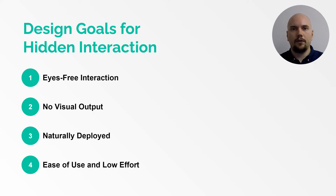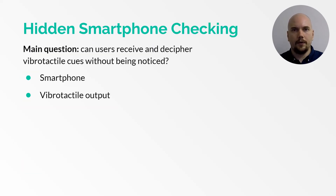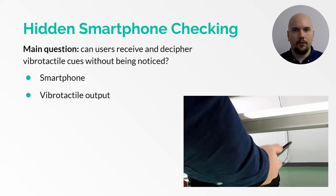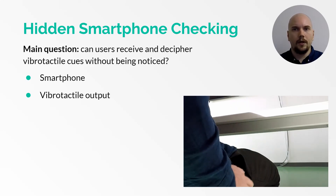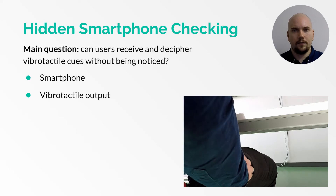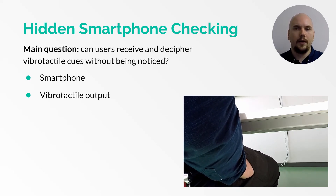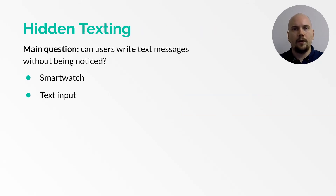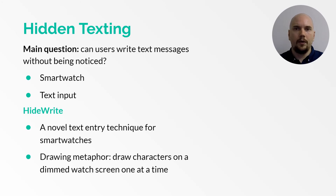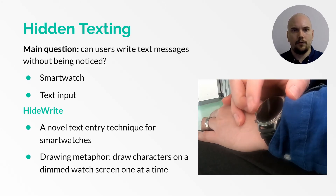Based on these design goals, we explored two different approaches. As a lightweight scenario, we investigated whether vibrotactile feedback could be used to acquire simple information from a mobile device. People often check their smartphones for notifications, so we particularly envisioned that vibrotactile feedback could convey to users whether they have any noteworthy notifications, like missed calls. Instead of pulling out the smartphone and looking at it, one could do so by simply feeling the phone and not necessarily even taking it out of the pocket. As an advanced scenario, we explored how users could write messages without being seen. Because no existing text entry technique was fully compatible with our design goals, we developed the concept of Hide-Write.